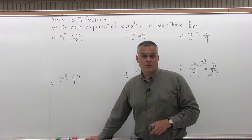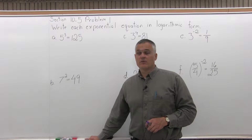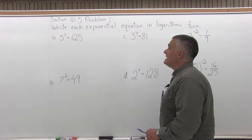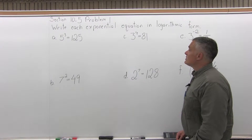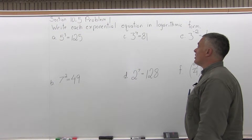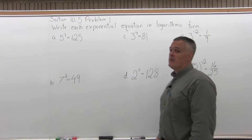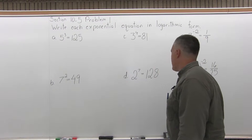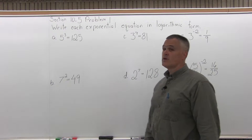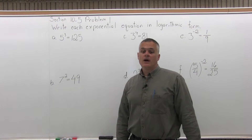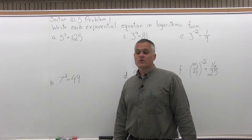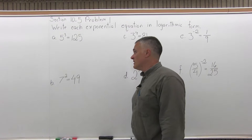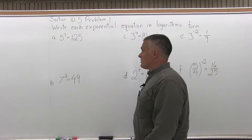This is Section 10.5, Problem number 1. It says write each exponential equation in logarithmic form. There are six equations, Parts A through F, for you to convert from an exponential equation to a logarithmic equation.